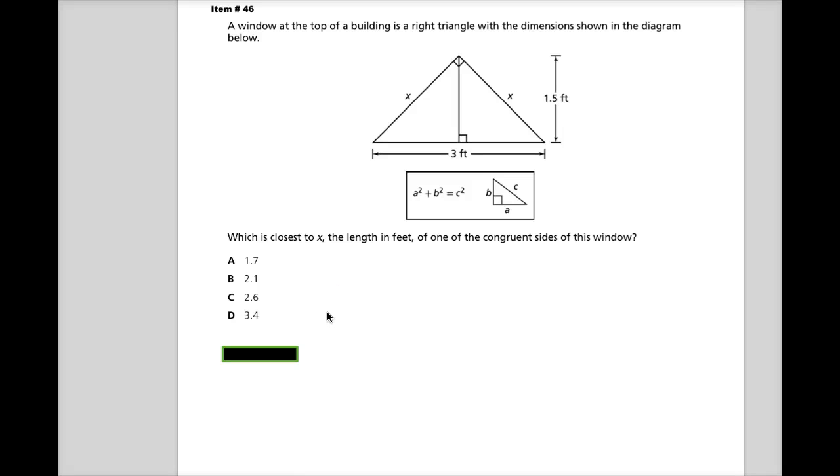This is item number 46 from the spring 2014 test items that were released for the Tennessee End of Course Algebra 1 test. The question says a window at the top of a building is a right triangle with the dimensions shown in the diagram below.